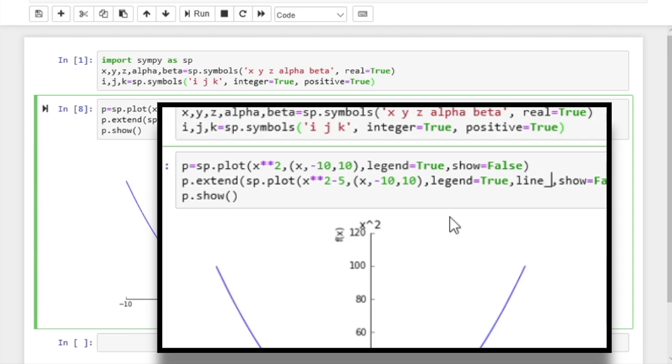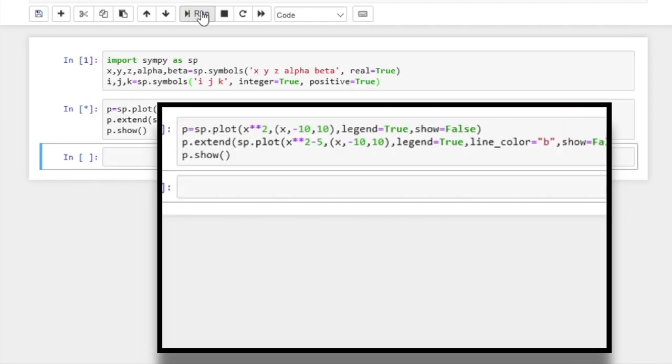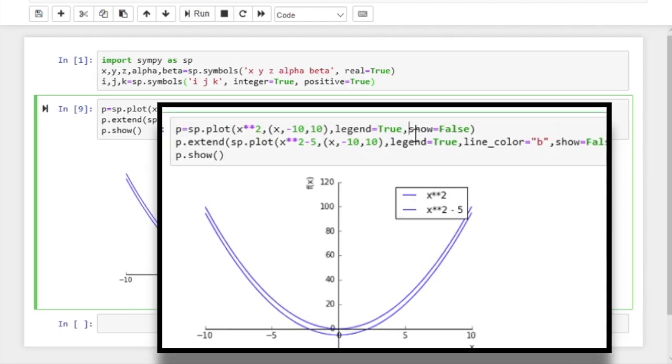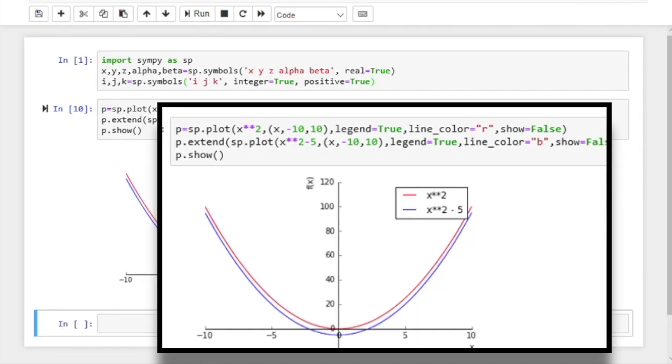And let's change the line color of the second to blue. So we set it to b, b for blue. Now if we run, the default color also happened to be blue. So we get the same color. So let's go to the first line and set the line color maybe equal to red or r for red. And now if we run, we have the two lines in different color.